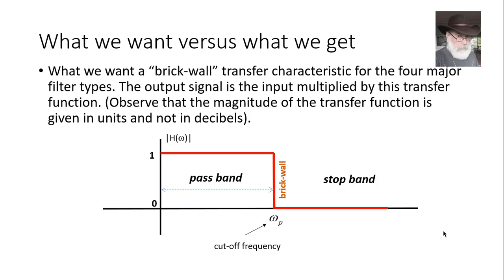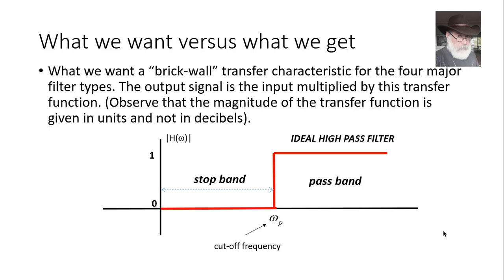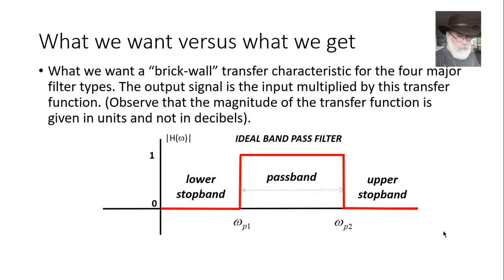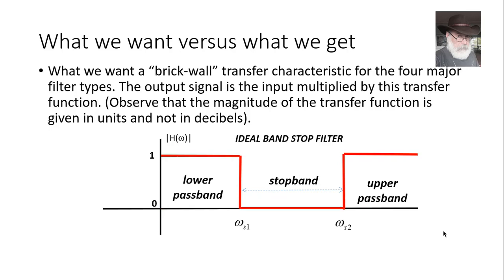What we have here is an ideal low pass filter because it passes low frequencies. This other one is an ideal high pass filter. And we could also have an ideal band pass filter or an ideal band stop filter.